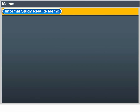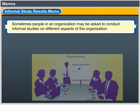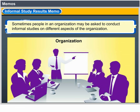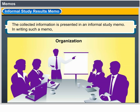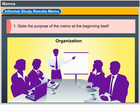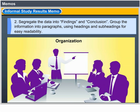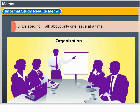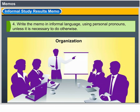Informal Study Results Memo: Sometimes, people in an organization may be asked to conduct informal studies on different aspects of the organization. The information gathered is presented in an informal study memo. In writing such a memo: 1. State the purpose of the memo at the beginning. 2. Segregate the data into findings and conclusions; group information into paragraphs using headings and subheadings for easy readability. 3. Be specific — talk about one issue at a time. 4. Write the memo in informal language using personal pronouns unless it is necessary to do otherwise.